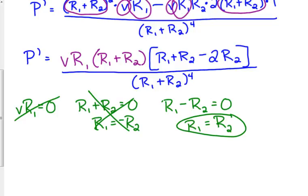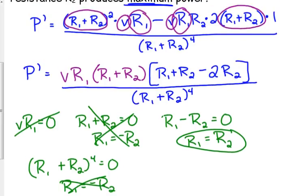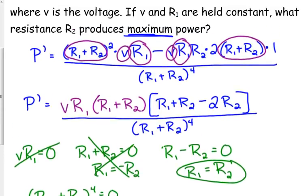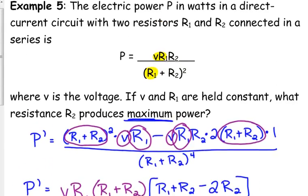So that's something. That could be a critical number. And then if we set the denominator equal to 0, the same thing is going to happen as that other piece right there. We're going to get that R sub 1 is equal to negative R sub 2, which again doesn't mean anything. So that means our critical number is when our resistors have the same value.